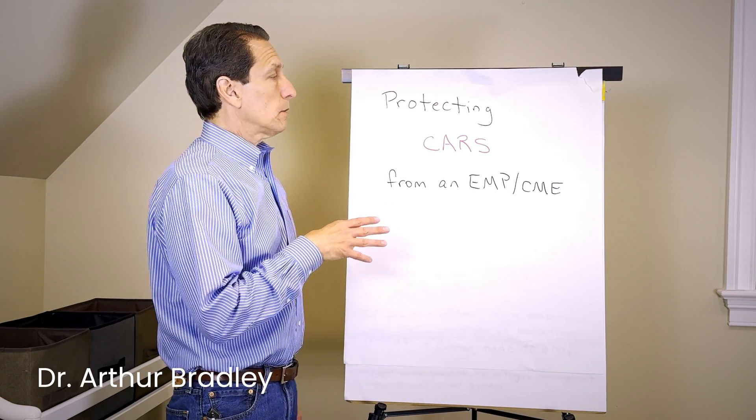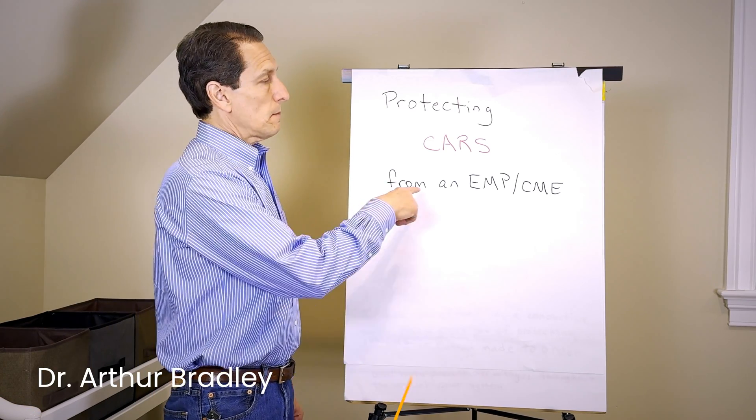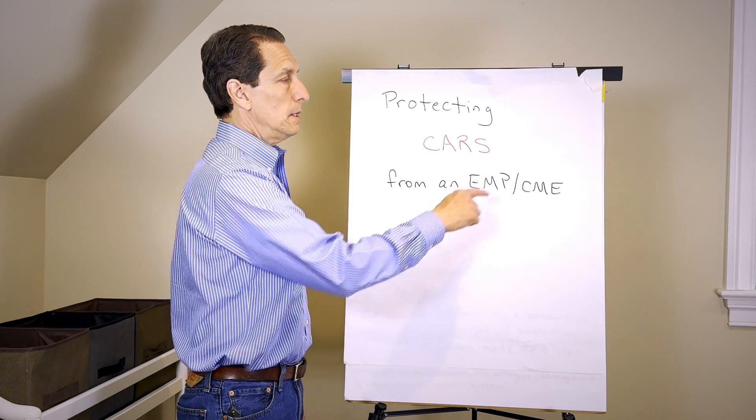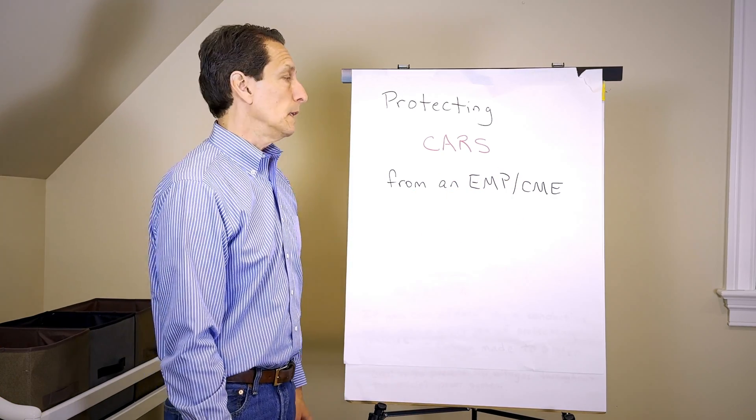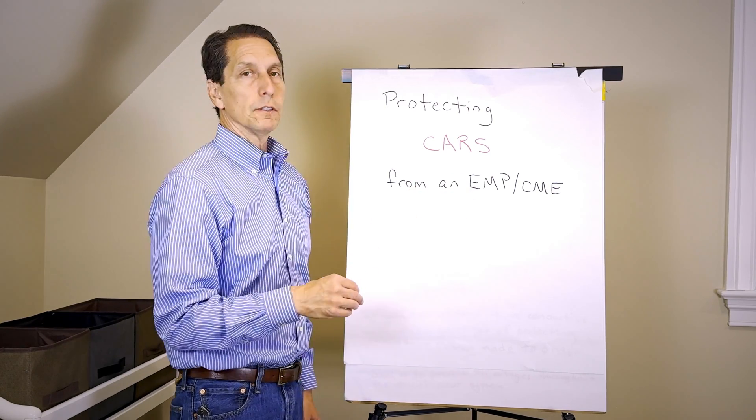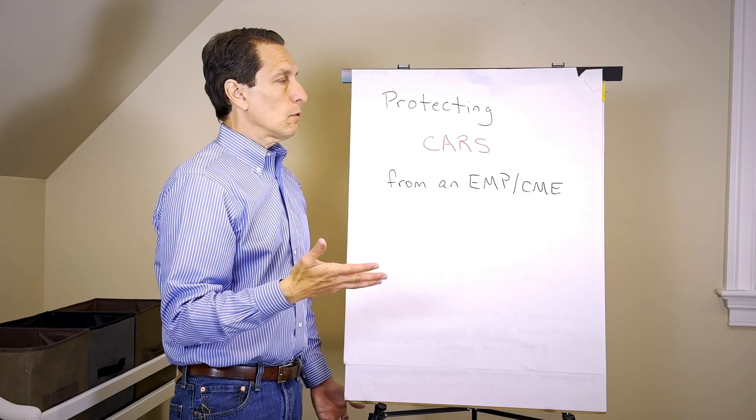Today we're going to talk about protecting vehicles, cars, trucks, or whatever from an EMP or CME. An EMP is an electromagnetic pulse and a CME is a solar coronal mass ejection. Most of this talk is about EMP protection.